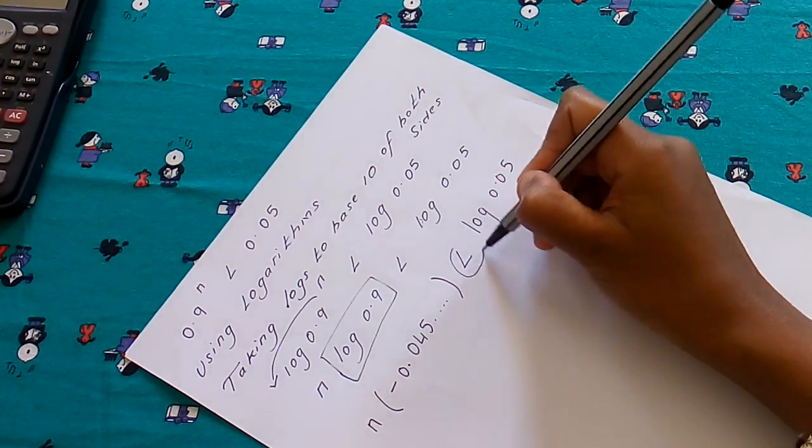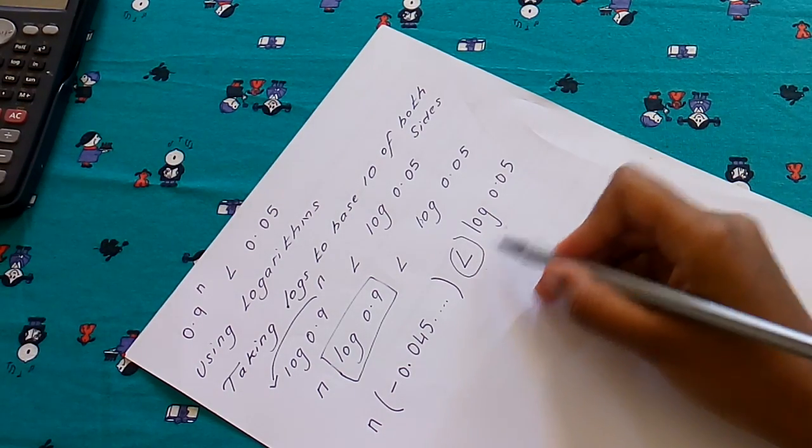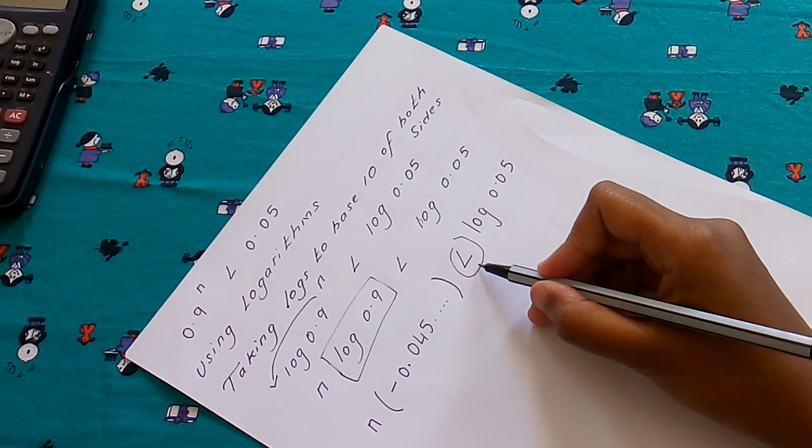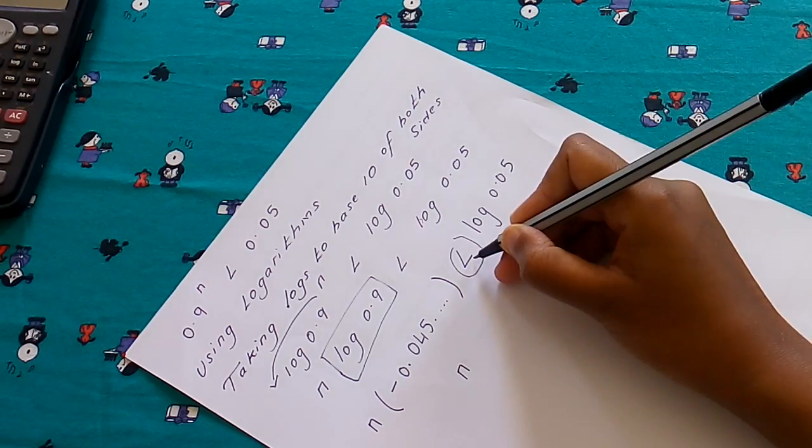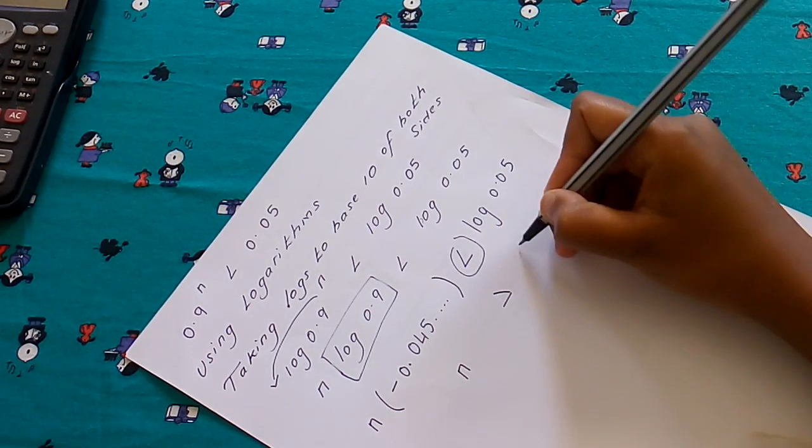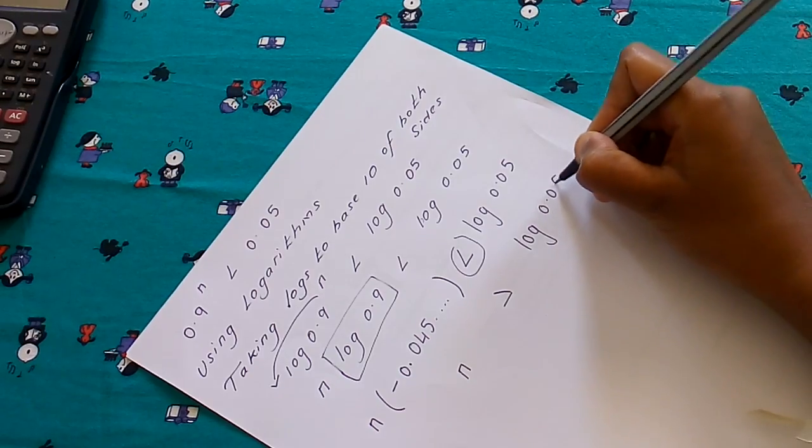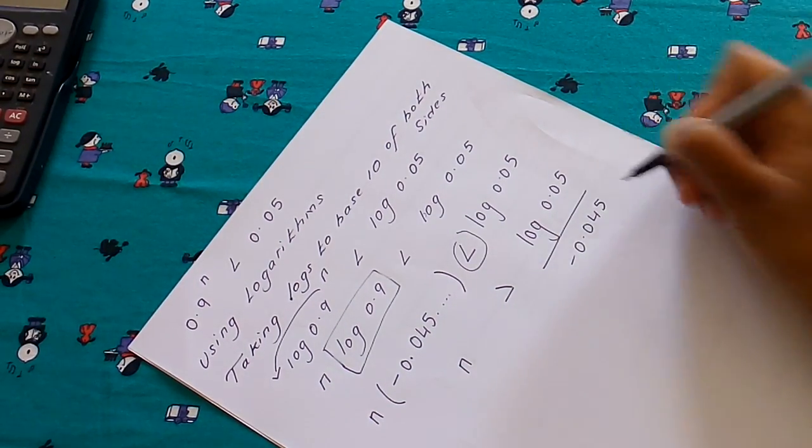And you know, here since we have an inequality sign, and if we're going to divide by a negative value, the inequality sign changes. So here we're going to have n is, instead of the less, it becomes greater than log(0.05) divided by this value.